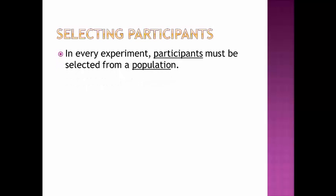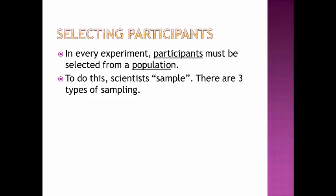Selecting participants. When conducting an experiment you must choose participants from a population. This is how you get your sample, and then you can do tests on your sample and conduct an experiment where you get your results. In order to collect the sample there are three types of sampling that we have to carry out.